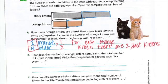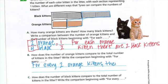How does the number of orange kittens compare to the total number of kittens in the litter? Write a comparison beginning for every. So, we could say, for every two orange kittens, there are how many total? To find out, well, we know we have two orange, and four black, so total means to add, so that gives us six. So, this time, our comparison was orange to total.